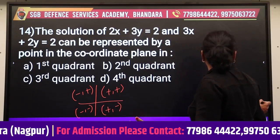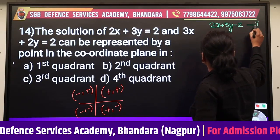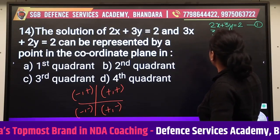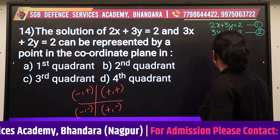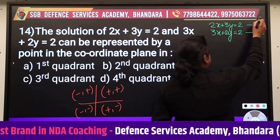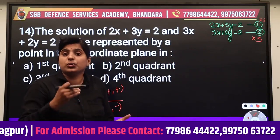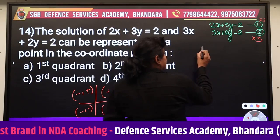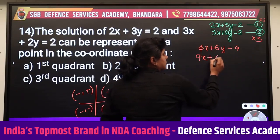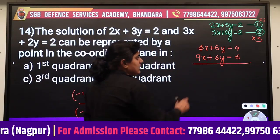The first equation given is 2x + 3y = 2, call it equation 1. The second equation is 3x + 2y = 2, call it equation 2. To make the coefficients equal, multiply equation 1 by 2 and equation 2 by 3, giving two new equations: 4x + 6y = 4 and 9x + 6y = 6.